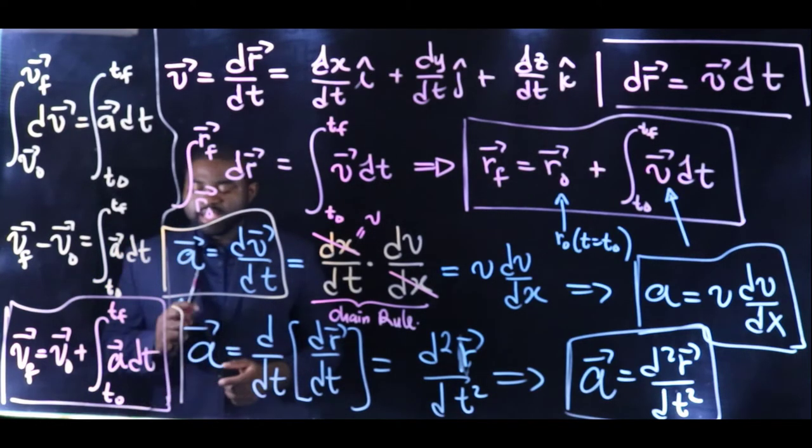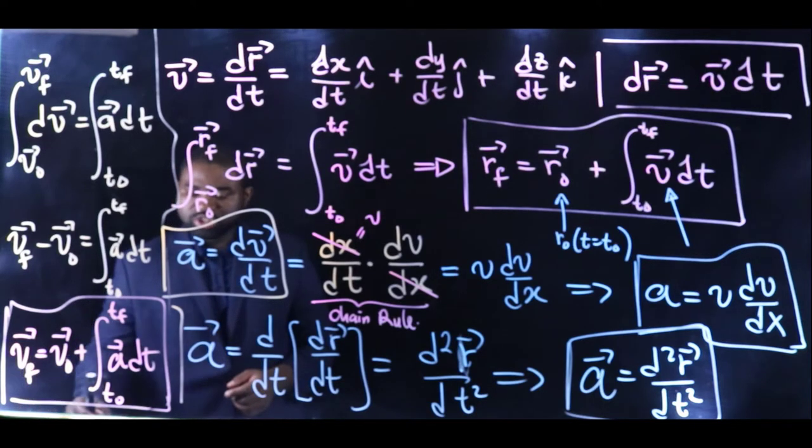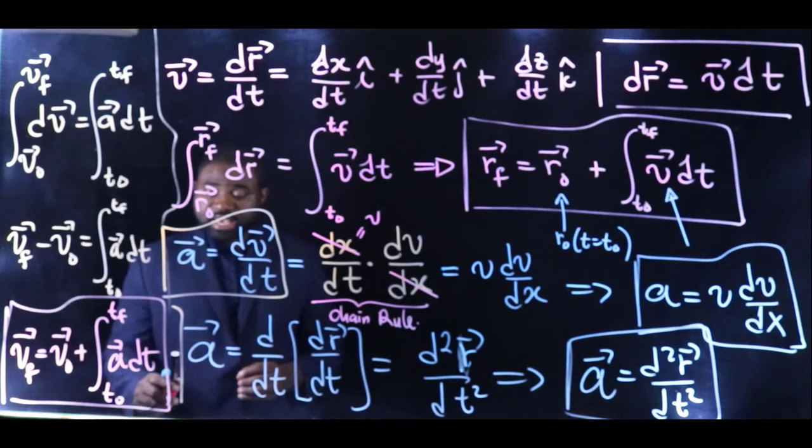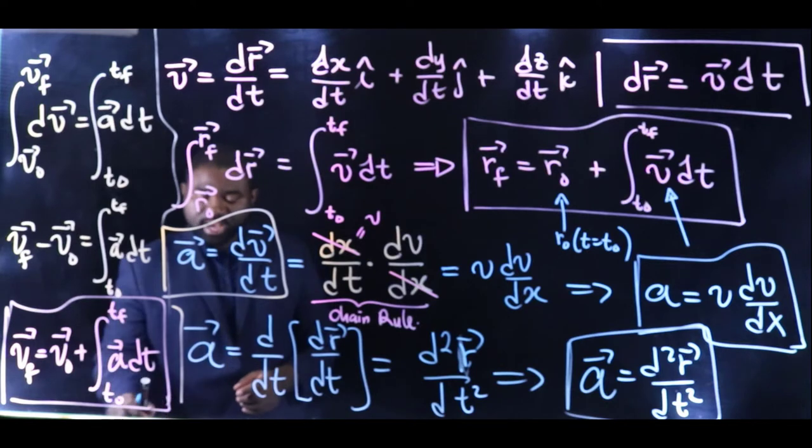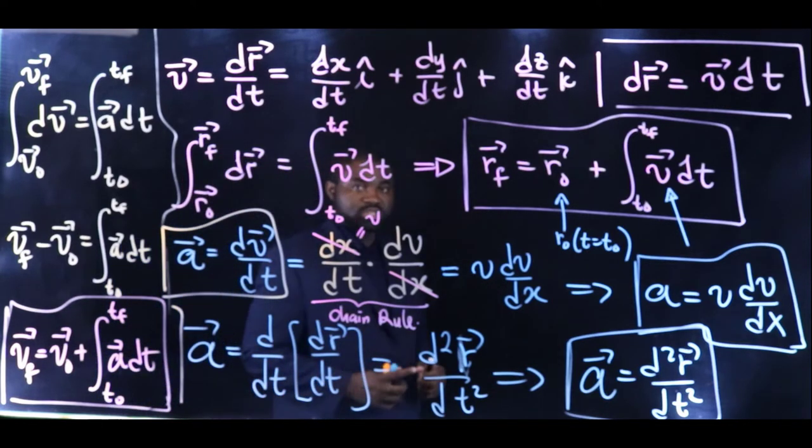This equation tells us how the velocity of the particle changes with respect to time. And if we know the function a, we will be able to determine at any time t the value of v. And when this happens, we see that the motion of the particle is completely described.